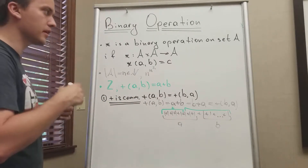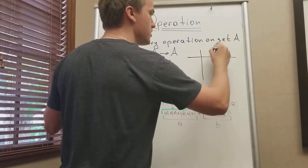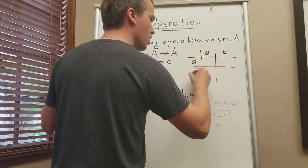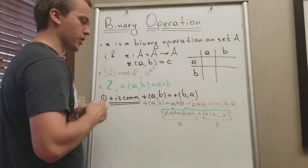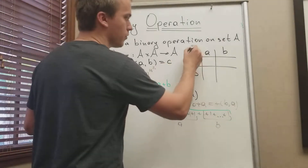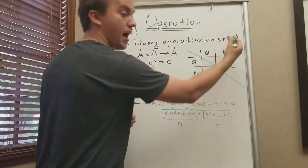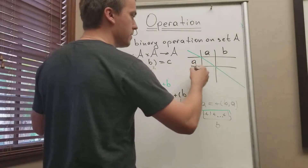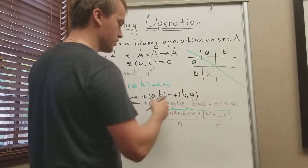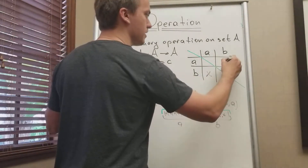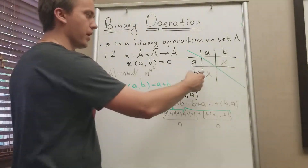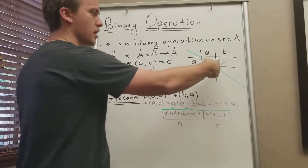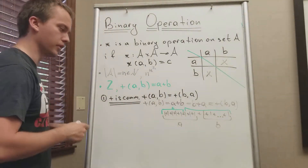In table notation, if I have a set of two elements, commutativity means I only need to care about half of the table — the upper triangle. Because for every entry B*A in the lower triangle matrix, I get the same element as the corresponding A*B entry in the upper triangle.